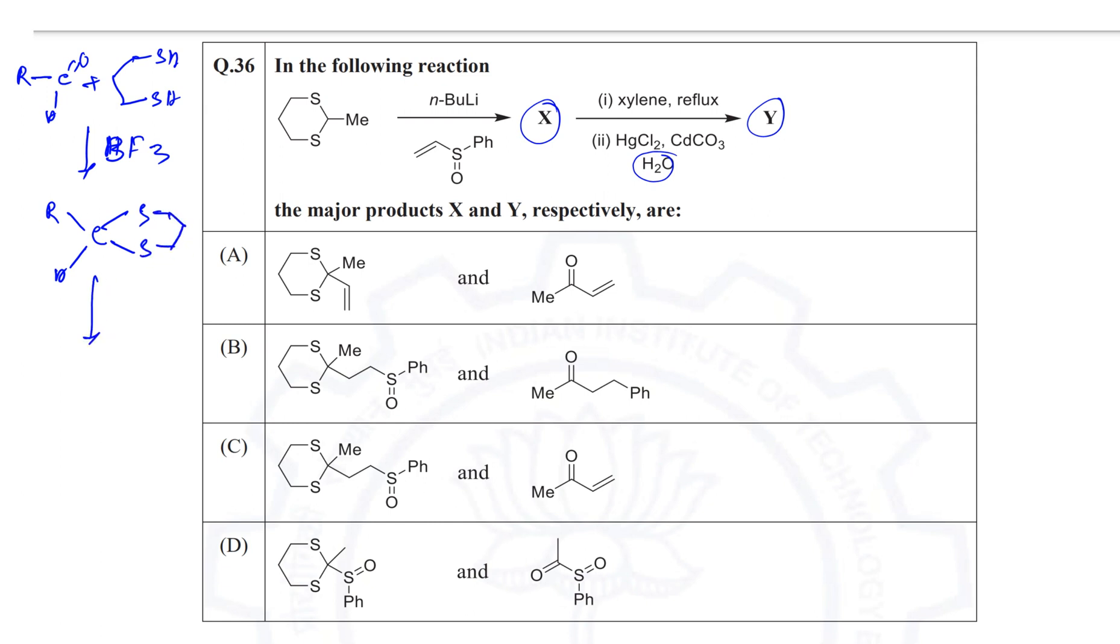Now, one thing you have to know here is that in a carbonyl compound, the carbonyl carbon is generally electrophilic so nucleophiles attack here. But in this acetyl, due to these two sulfurs, this carbon is converted into a nucleophilic center. Because if it is treated with base, the corresponding anion will be formed and will be stabilized by the two sulfur 3d orbitals.